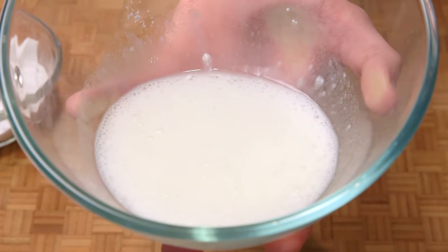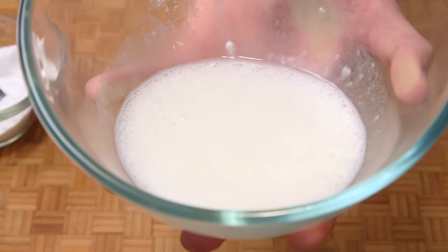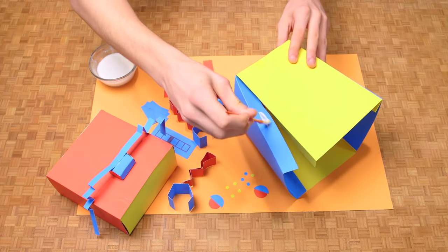And there you have it, your own homemade glue, milk glue. Now we have our glue, we can get back to making a robot.